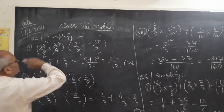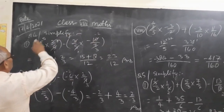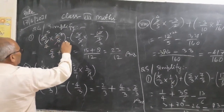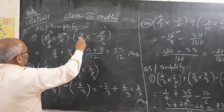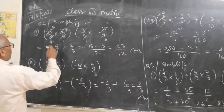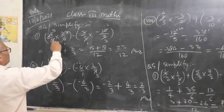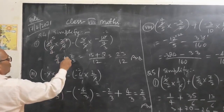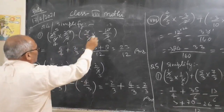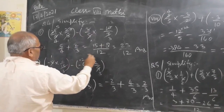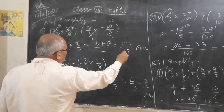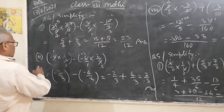Math simplified, question number four, first part: 25 upon 8 multiplied by 2 upon 5 in one bracket, minus 3 upon 5 into minus 10 upon 9 in second part. Now 5 by 25 gives 4, so we get 5 upon 4 plus 2 upon 3. When we solve this bracket, we take LCM as 12, giving 15 plus 8, that is 23 upon 12. It is the correct answer. Now third part.